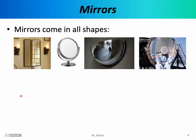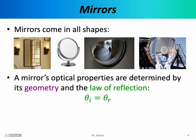Now that we've learned some basic facts about the human vision system, we can start our discussion of mirrors. Mirrors come in all shapes and sizes. There are flat mirrors like the kind you might see in a bathroom, concave spherical mirrors like the ones you might see in makeup or shaving mirrors, convex spherical mirrors like the ones you might see in parking garages, and even parabolic or elliptic mirrors like the ones you might see in telescopes or automobile headlamps. Regardless of the shape of the mirror, the optics is dictated by the same basic law: the law of reflection, which tells you that the angle of incidence must equal the angle of reflection.